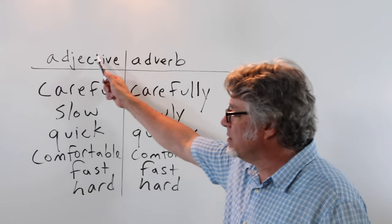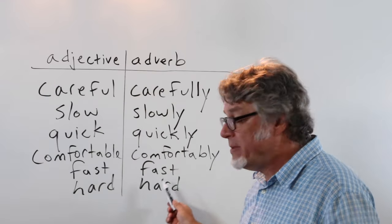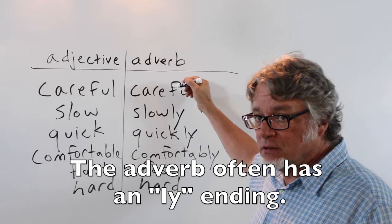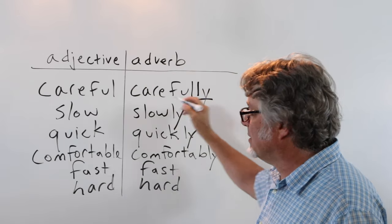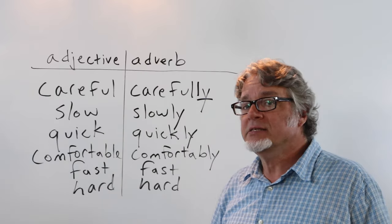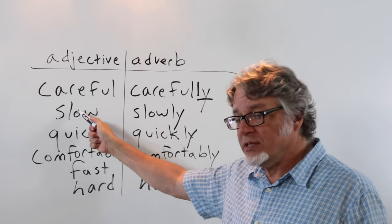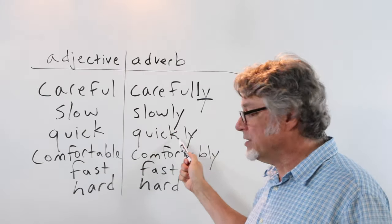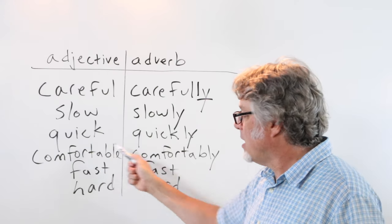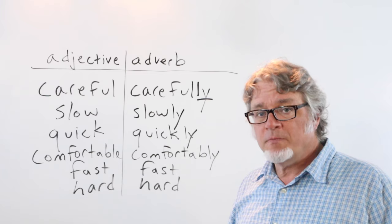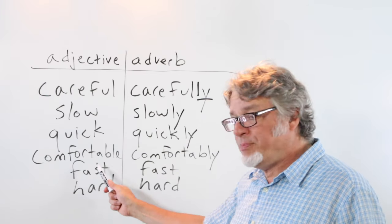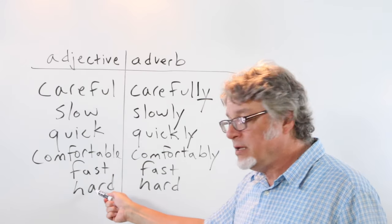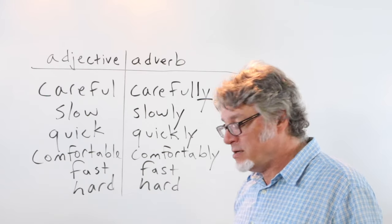Here are some adjectives and their corresponding adverbs. One of the differences between these two groups is that the adverb often has an -ly ending: careful/carefully, slow/slowly, quick/quickly, comfortable/comfortably. There are also some irregular adverbs — for example, 'fast' as an adjective is also 'fast' as an adverb, and 'hard' as an adjective is 'hard' as an adverb.